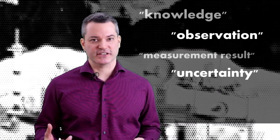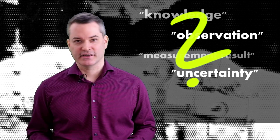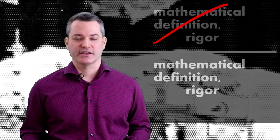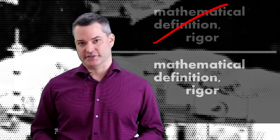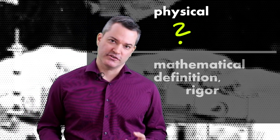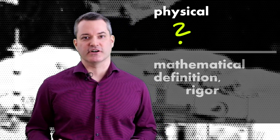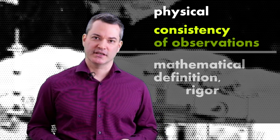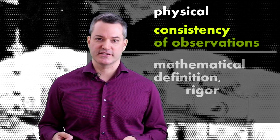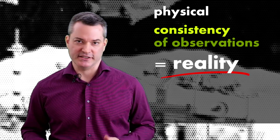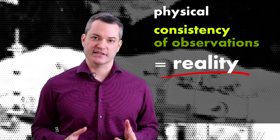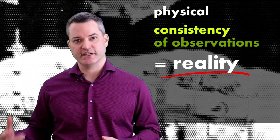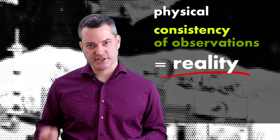How do we know whether our physical language makes sense? We cannot apply the same standards of rigor and complete definition which we use in the mathematical part. Instead, our measure for the reliability of our physical concepts must be the consistency of our observations. It is this consistency of our experience that we call reality. We consider something real if we can observe it repeatedly and in multiple ways, getting the same consistent result.